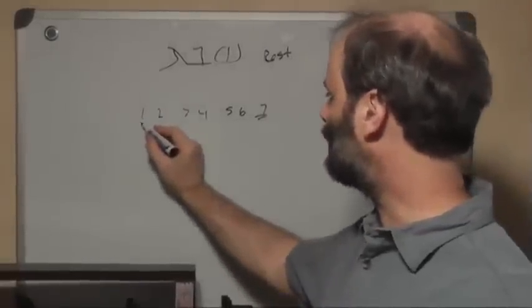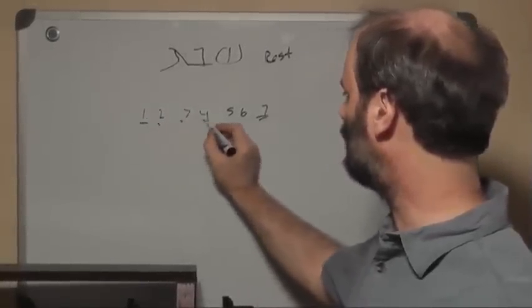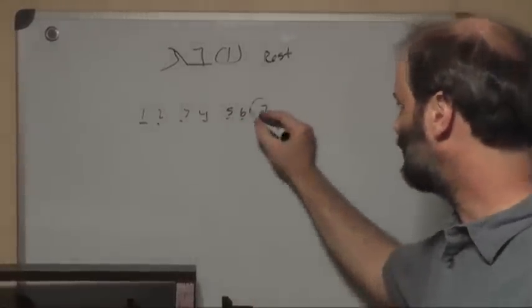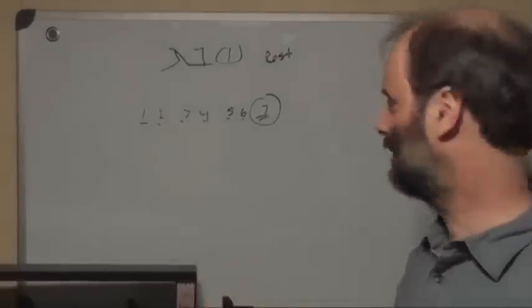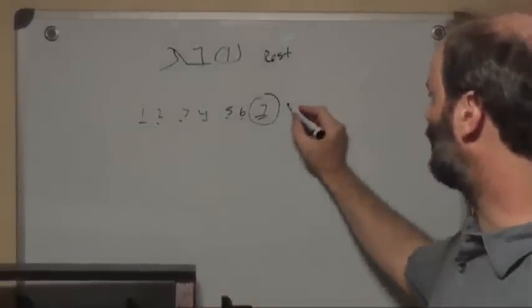So the farmers were allowed to plant one, two, three, four, five, six years, and in the seventh year, they were not to sow or reap. And then the cycle would repeat again.